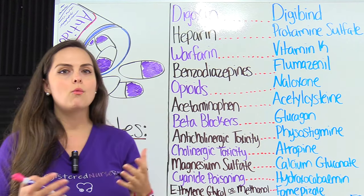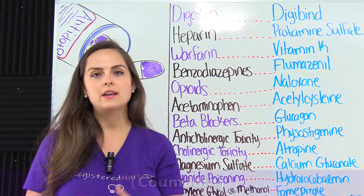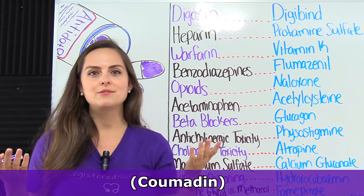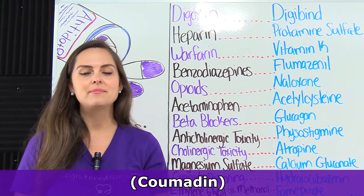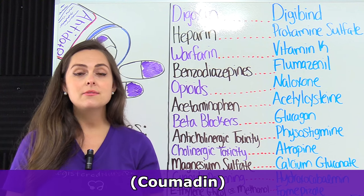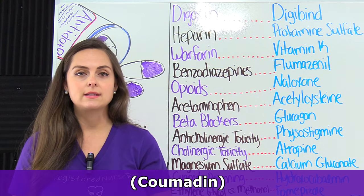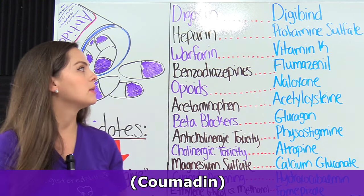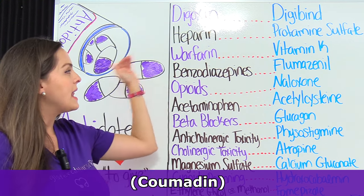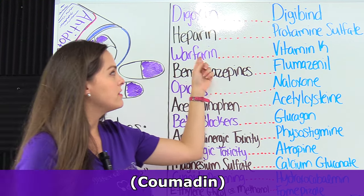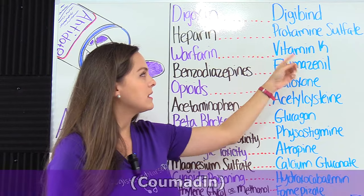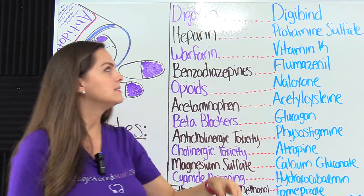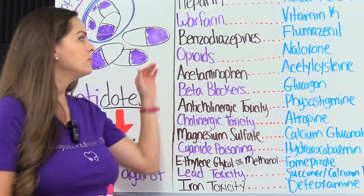Then we have warfarin — you may hear this referred to as Coumadin. This is also an anticoagulant, so it thins the blood. The antidote for this is vitamin K. Definitely remember those two.